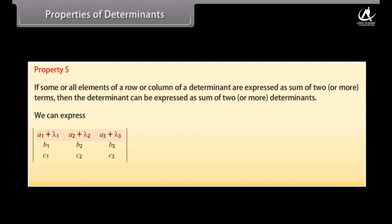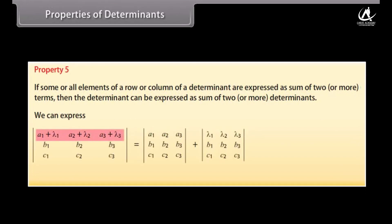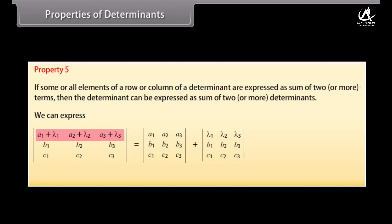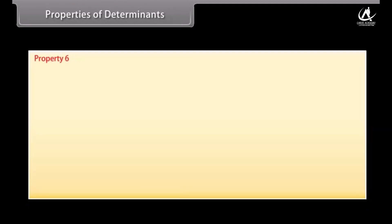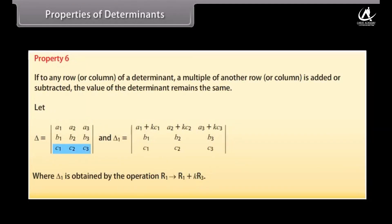Property 5: If some or all elements of a row or column of a determinant are expressed as the sum of two or more terms, then the determinant can be expressed as the sum of two or more determinants. Property 6: If any row or column of a determinant has a multiple of another row or column added or subtracted, the value of the determinant remains the same.